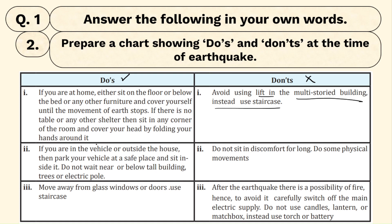If you are in a vehicle or outside the house, you can park the vehicle at a safe place and sit inside it. But caution: do not park near tall buildings, trees, or electric poles as they may fall. Park in an open area. Also, move away from glass windows and glass doors as they can crack during an earthquake.